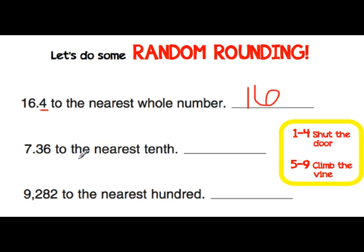Rounding to the nearest tenth place: the tenth's place is the number we underlined. 3 is in the tenth's place. Looking at the number to the right of the 3, it fits our rule 5 through 9 — climb the vine. So we are going to increase the 3 by 1. So we have 7.4, and everything after turns to zeros.